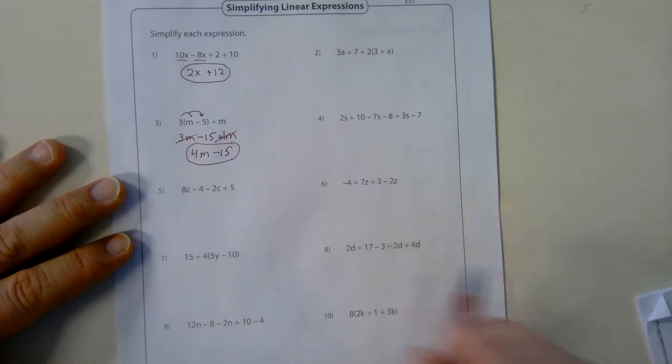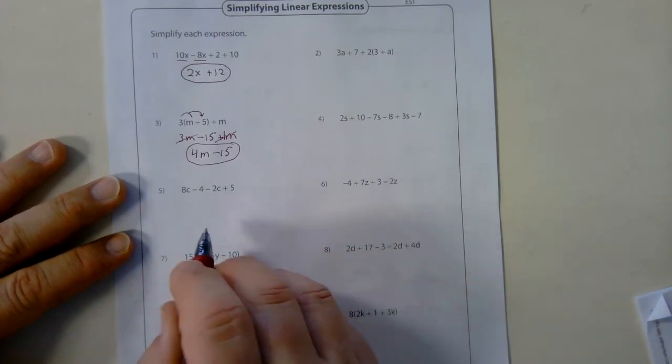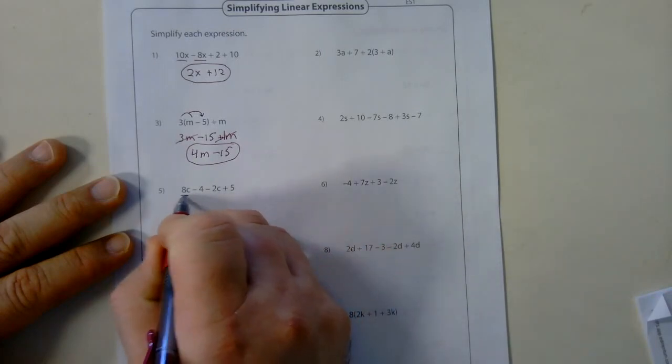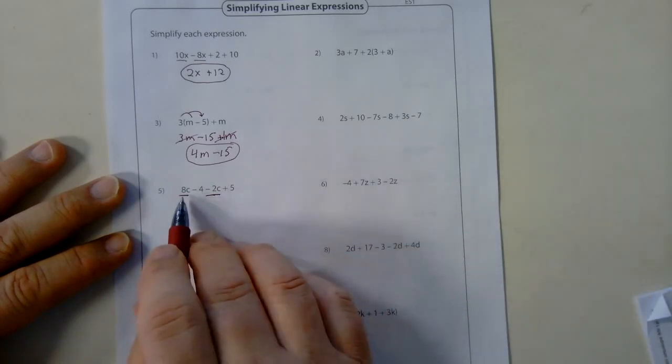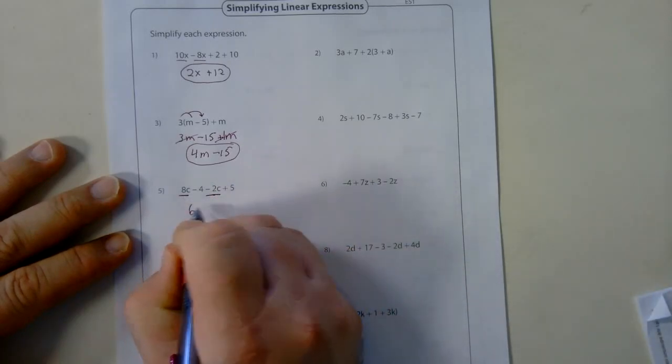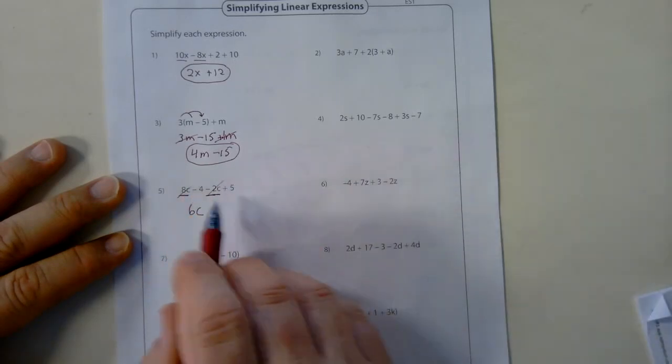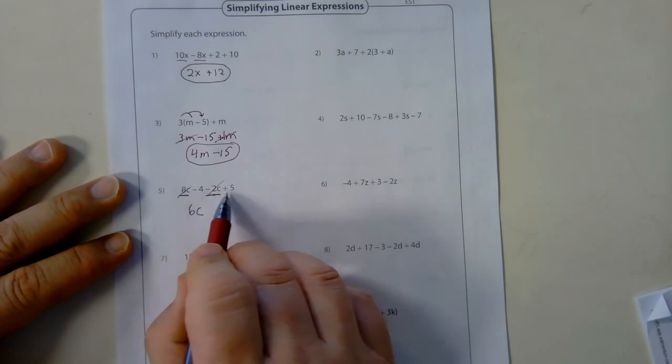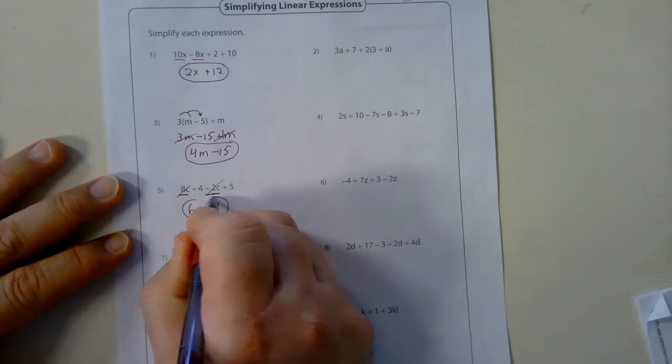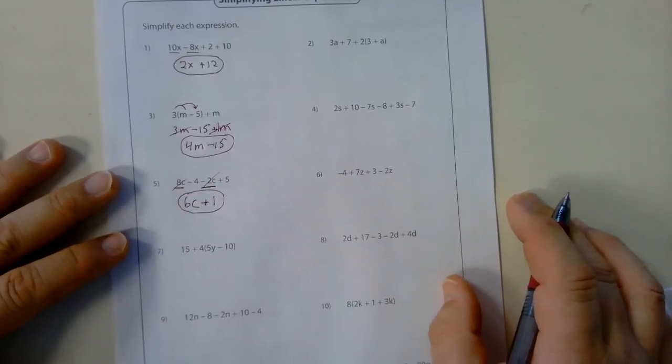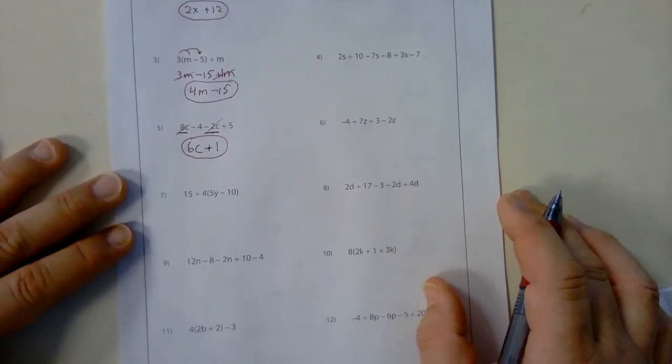Number 5. 8c minus 4 minus 2c plus 5. I'm going to look for the c's first. I have 8c here and a minus 2c here. So 8 minus 2 is 6. Now I include my variable. So the c's are done. Then I have a minus 4 plus 5. That is a plus 1. So there's my final answer there. Hopefully you guys are getting these ready as I follow along. Hopefully you can understand and see what I'm doing in each question.